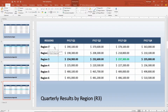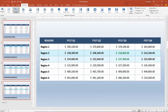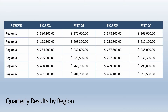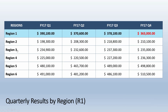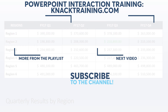Now regions one, two, and three — you can click back and forth between them and it highlights the relevant information. To put a bow on this, I highlight slides four back to one, add the Morph transition, and set it to about three quarters of a second. Using F5 to start the presentation, if somebody's interested in region three I can click on it and see Quarterly Results by Region (R3) with a nice background color and the high point highlighted. Clicking region one or region two toggles smoothly between those different elements.